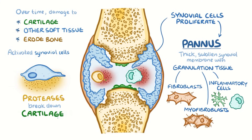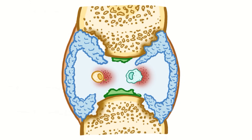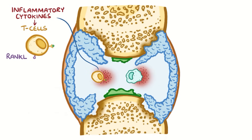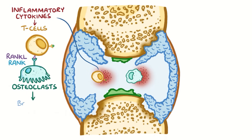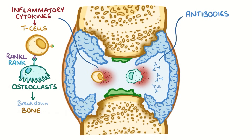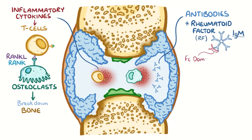Without the protective cartilage, the underlying bones are exposed and can directly rub against each other. In addition, inflammatory cytokines increase a protein on the surface of T cells known as RANKL, or receptor activator of nuclear factor kappa-B ligand. RANKL allows T cells to bind RANK, a protein on the surface of osteoclasts, to get them to start breaking down bone. Meanwhile, antibodies also enter the joint space. One antibody is called rheumatoid factor, or RF, which is an IgM antibody that targets the constant Fc domain of altered IgG antibodies. Another antibody is anti-cyclic citrullinated peptide antibody, or anti-CCP, which targets citrullinated proteins.